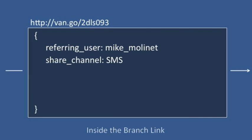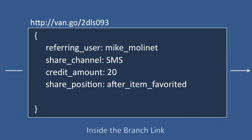We can also add a channel tag to analyze which share platforms lead to the most conversions. We can vary the credit amount if we want. We can even identify at what point in the app Mike wanted to share — for example, right after he favorited an art piece. In fact, we can put in any kind of custom data that we want using a dictionary.